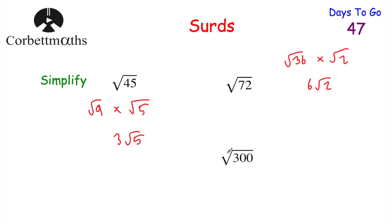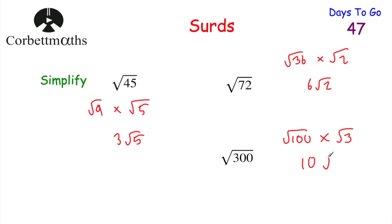For the square root of 300, the largest square number that's a factor of 300 is 100. So that'd be root 100 multiplied by root 3, because 3 times 100 is 300. The square root of 100 is 10, so we get 10 root 3. So root 300 is the same as 10 root 3.